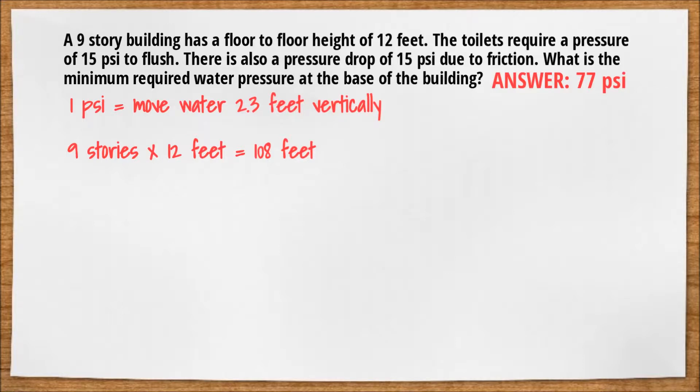Next, we have to take the 108 feet and divide it by 2.3 feet to find out how much psi is required to lift the water up to the top of the building. This gets us 46.95 psi.